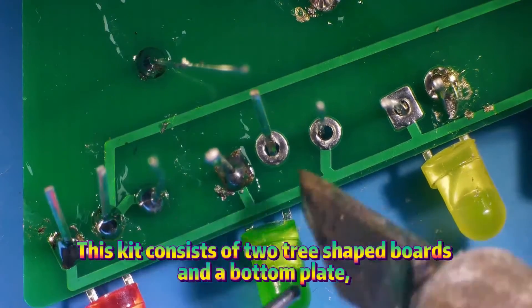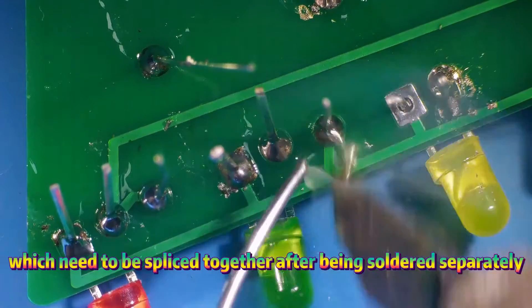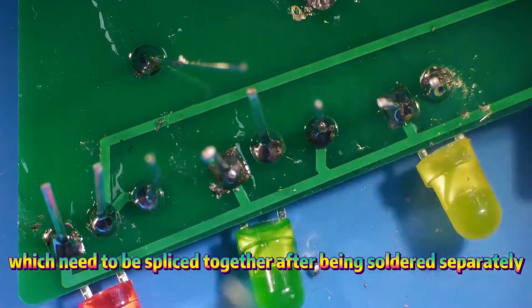This kit consists of two tree-shaped boards and a bottom plate, which need to be spliced together after being soldered separately.